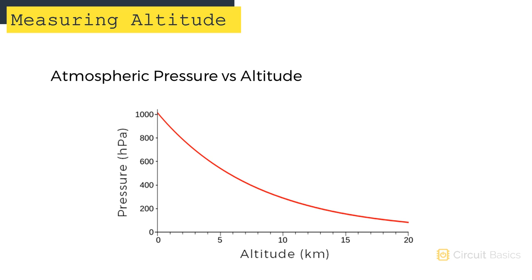The relationship between atmospheric pressure and altitude looks like this. The y-axis shows the pressure in hectopascals, and the x-axis shows altitude in kilometers. At very low altitudes, the pressure is near 1013 hectopascals. The pressure decreases along this curve until it reaches zero at the very top of the atmosphere.